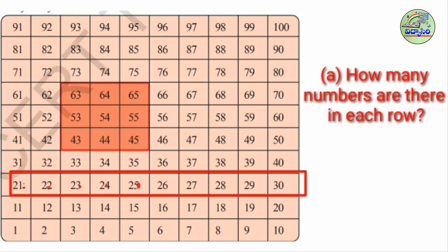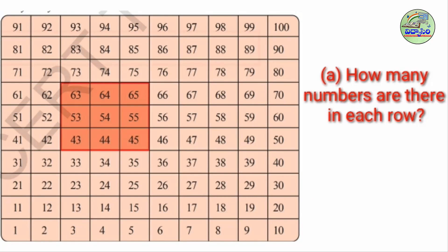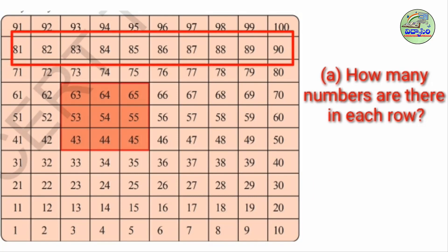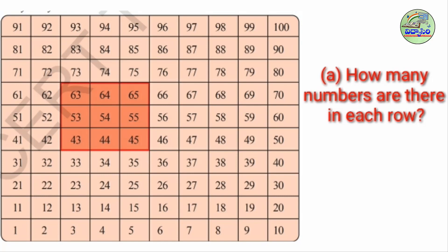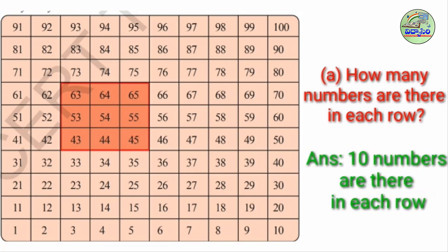For example, I will take this row: 21, 22, 23, 24, 25, 26, 27, 28, 29, 30. Here also, how many numbers are there? 10 numbers only. So in this row also, 10 numbers. Like this, all rows have only 10 numbers. Count it — yes, the answer is 10 numbers are there in each row. I think you observed very well.